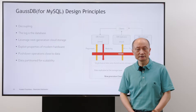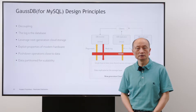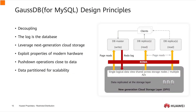We already saw that traditional database design does not work well in a modern cloud environment. We need to leverage cloud technology and modern storage systems. The design of GaussDB follows these principles. The first is decoupling — the separation of storage and compute, so storage and compute can scale independently. The second principle is log is the database: the compute node writes only logs to the storage, no page flushing, which significantly reduces network traffic.